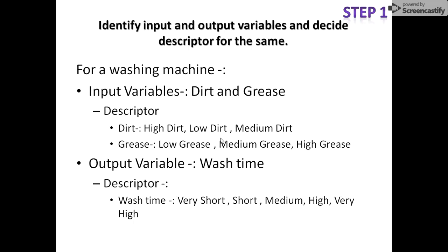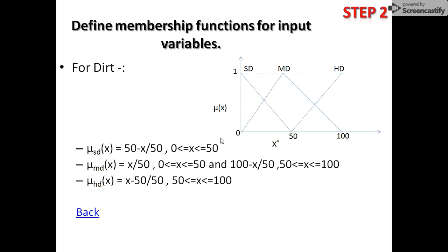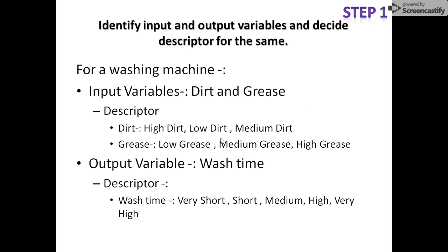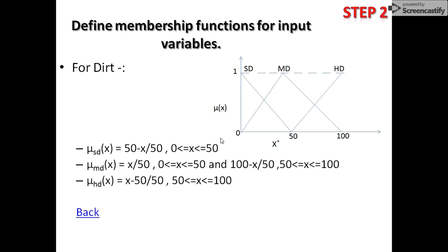The descriptors should be relevant to the specific term we are taking. For the output variable wash time, we have to define five descriptors: very short, short, medium, high, and very high. So in step one, we have identified the input and output variables that were already given, and then defined the descriptors or linguistic variables for all the input and output variables.